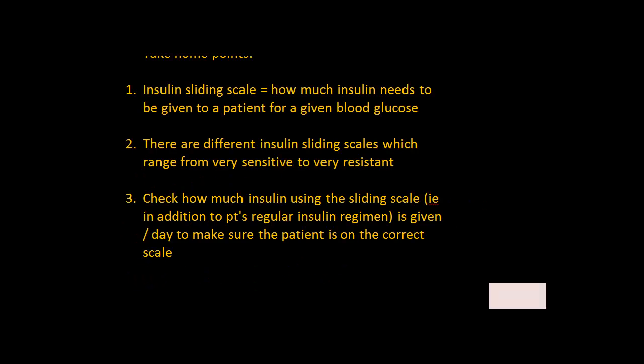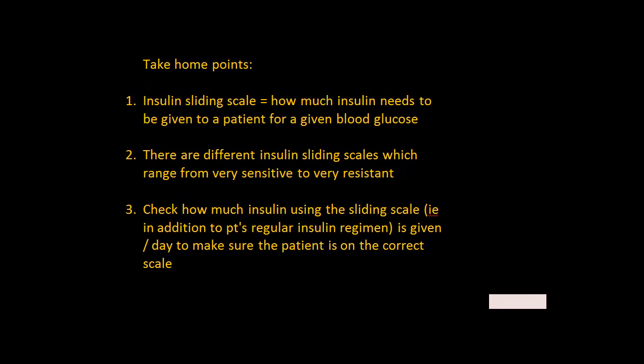Take-home points: The insulin sliding scale is how much insulin needs to be given to a patient for a given blood glucose level. There are very different insulin sliding scales, which range from sensitive to very resistant. Finally, you should check how much insulin the patient is using based on this sliding scale — in addition to the regular regimen given per day — to make sure the patient is on the correct scale.